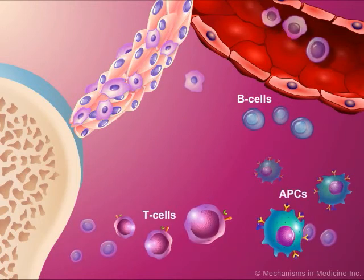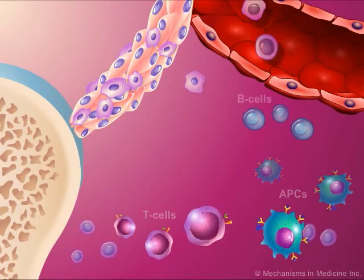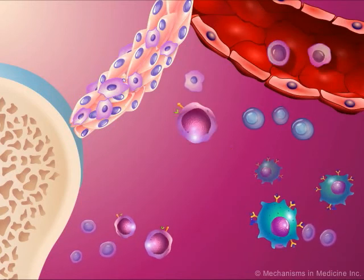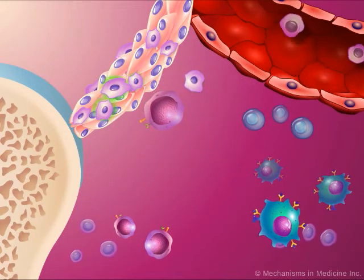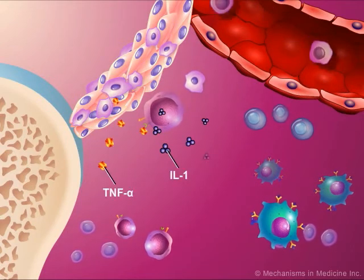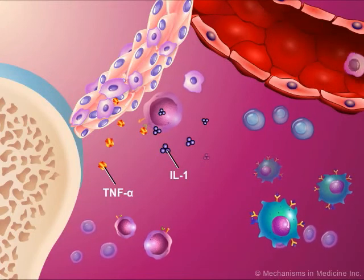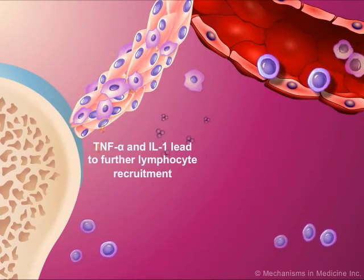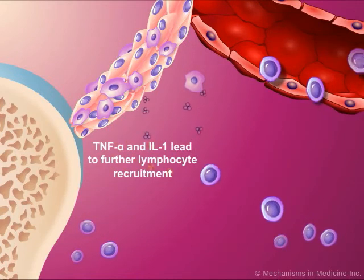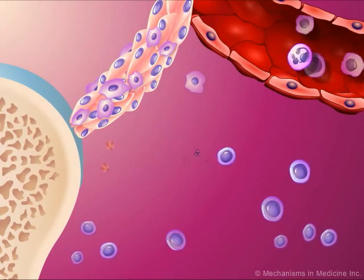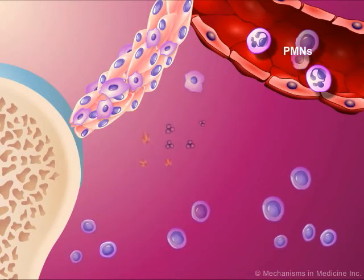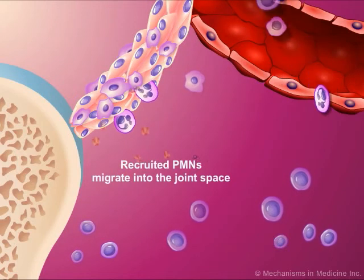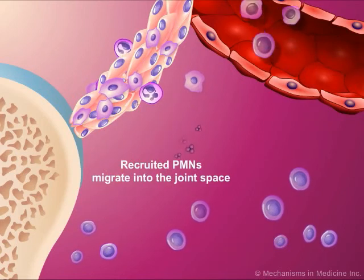Concurrently, nearby antigen-presenting cells, or APCs, interact with and activate T cells, signaling the macrophages and macrophage-like synoviocytes to release the inflammatory mediators tumor necrosis factor alpha, or TNF-alpha, and interleukin-1, or IL-1. TNF-alpha and IL-1 signal the recruitment of additional inflammatory cells from the blood. This signaling also recruits polymorphonuclear neutrophils, or PMNs, from the circulation, which then proceed to migrate across the hyperplastic synovial lining and into the joint space.